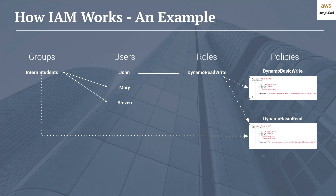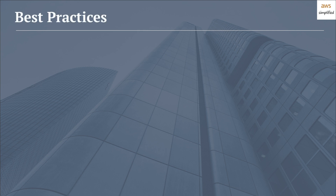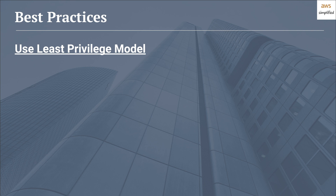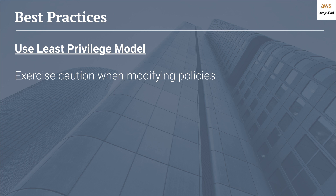Let's move on to best practices when using IAM. The first and most important is to use the least privileged model — only give users the minimum set of permissions they need to perform their task. Don't give folks too many permissions, as it can lead to security vulnerabilities or someone accidentally deleting production database tables. I'm really stressing this because it has happened to me before. Secondly, exercise caution when modifying existing policies. It's very easy to modify a policy thinking it's safe, and then find out one of your production applications was using that policy and suddenly lost access to a resource. Be careful when modifying production IAM configuration.